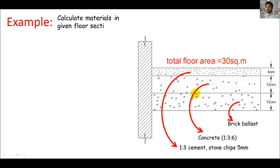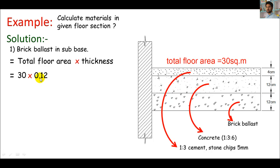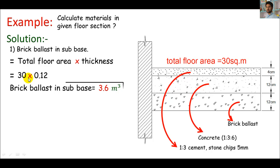Everything is given, so I'll come straight into solutions. My first approach will be the brick base. This is the base layer, so the volume must be total area times the thickness of this layer. Plugging in: 30 square meters times 0.12 meters — converting 12 centimeters by dividing by 100 — you must get brick base volume of 3.6 cubic meters. That was our first approach.